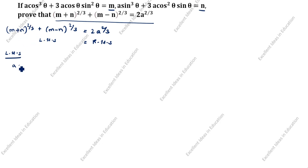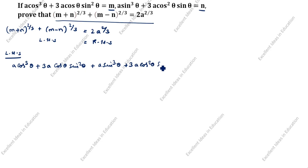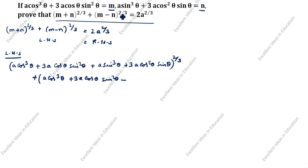So what is the m value? m = a cos³θ + 3a cosθ sin²θ. And n = a sin³θ + 3a cos²θ sinθ. For m−n, we subtract: minus a sin³θ minus 3a cos²θ sinθ, whole power 2/3.